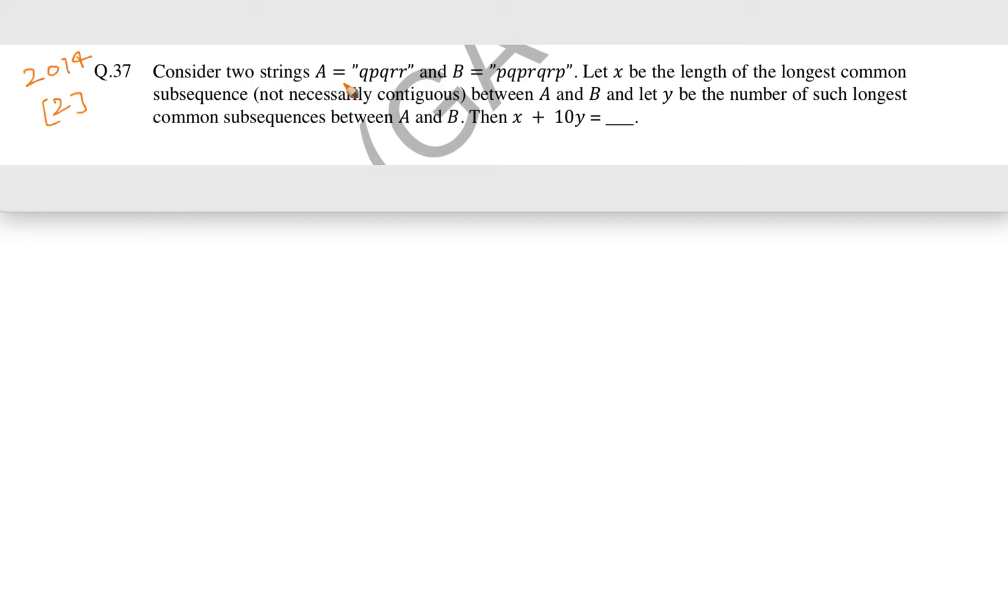The question is: consider two strings A and B. Let x be the length of the longest common subsequence between A and B, and let y be the number of such longest common subsequences. We have to find the values of x and y, and once we find them, we can give the answer to x plus 10y.